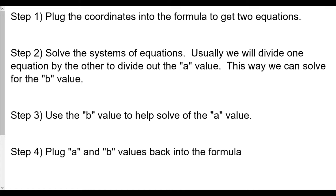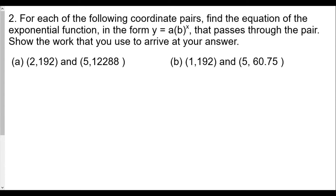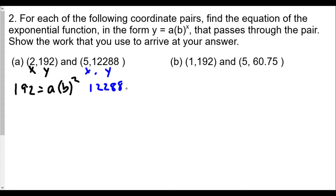It's a little different from before because in the previous problems we were able to find a right away since one of the x values was zero. This time around we don't have that. So we apply our rules — again, plug in our values into the form y equals a times b to the x. Since the first coordinate has x of 2 and y of 192, we get 192 equals a times b squared. For the second coordinate, x is 5 and y is 12,288, so our second equation is 12,288 equals a times b to the fifth power.